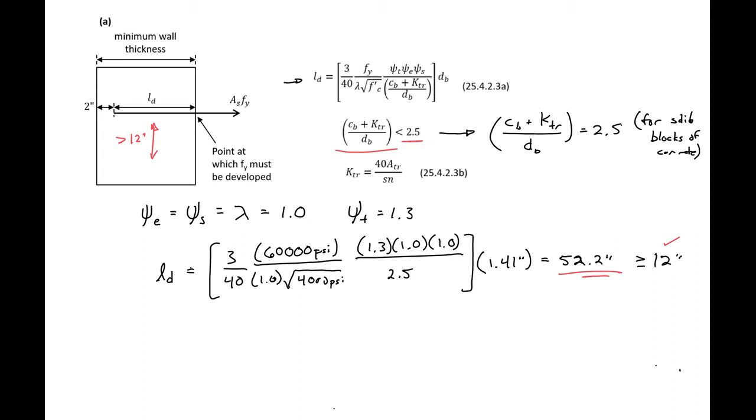And so now we can figure out our total thickness. Our minimum thickness of our wall would be our LD, 52.2, plus 2 inches, which is the distance from the end of the bar to the end of the wall. So 54.2 inches.